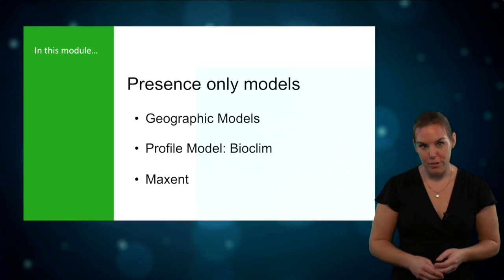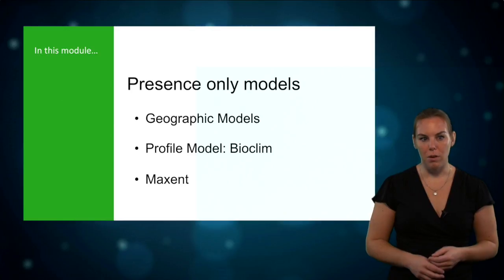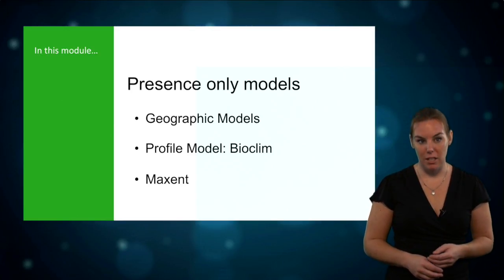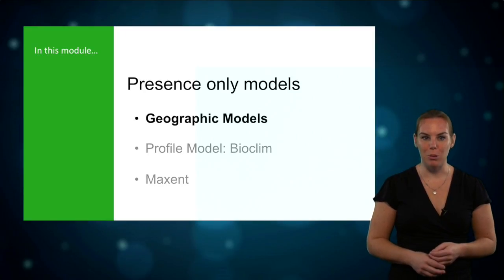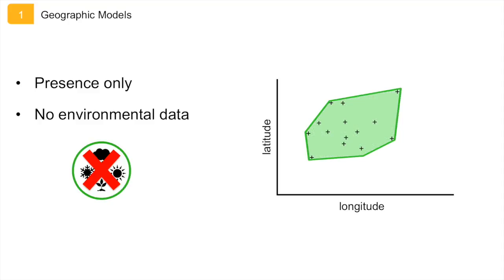I will explain two different geographic models and then move to Bioclim, which is the most well-known profile model. And lastly I'll explain Maxent, a popular machine learning model. Let's start with geographic models. As I mentioned in module 4, geographic models are an easy way to start exploring the distribution of your species of interest. These models only use presence data and simply draw a shape around them. Because they don't use any environmental data, they are mostly useful to obtain a quick idea of where a species occurs.